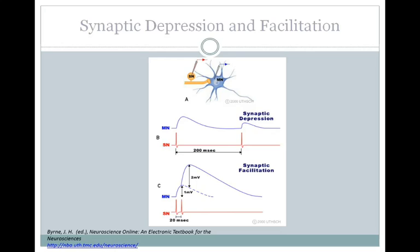There are many timescales over which synaptic plasticity can occur. Synaptic depression and synaptic facilitation occur over a very short timescale. If you take a synapse with a sensory neuron and put a stimulating electrode in it and record from the postsynaptic neuron, in some synapses you can see what's termed synaptic depression. If you stimulate the presynaptic neuron twice within 200 milliseconds of each other and record the postsynaptic EPSP, you can see that the second EPSP has a much lower amplitude than the first. This is termed synaptic depression.